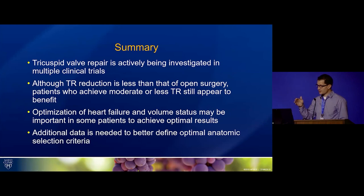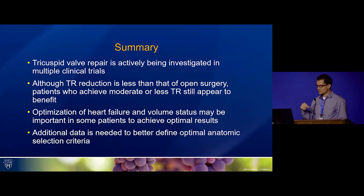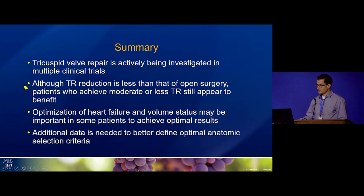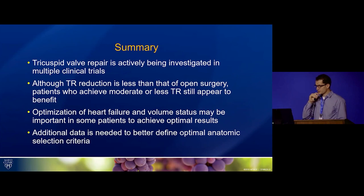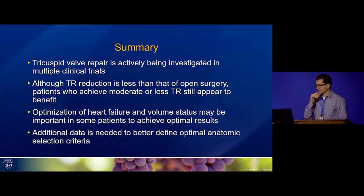In summary, tricuspid valve repair is being investigated in multiple clinical trials — edge-to-edge, annular reduction strategies, and replacement trials — making it a very active area of research. TR reduction is less effective than open surgery, but there is a signal of benefit for non-surgical candidates if TR can be reduced to moderate or less. This case highlights that optimizing heart failure and volume status is important for achieving good results, and better screening and anatomic selection criteria are needed.